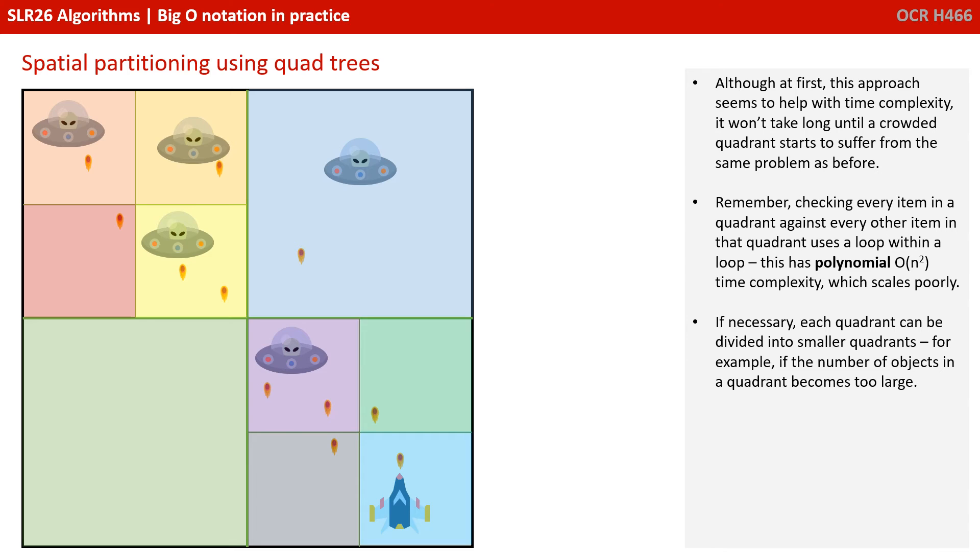So if necessary, each quadrant can be further divided into smaller quadrants, for example, if the number of objects in that quadrant starts to become too large.